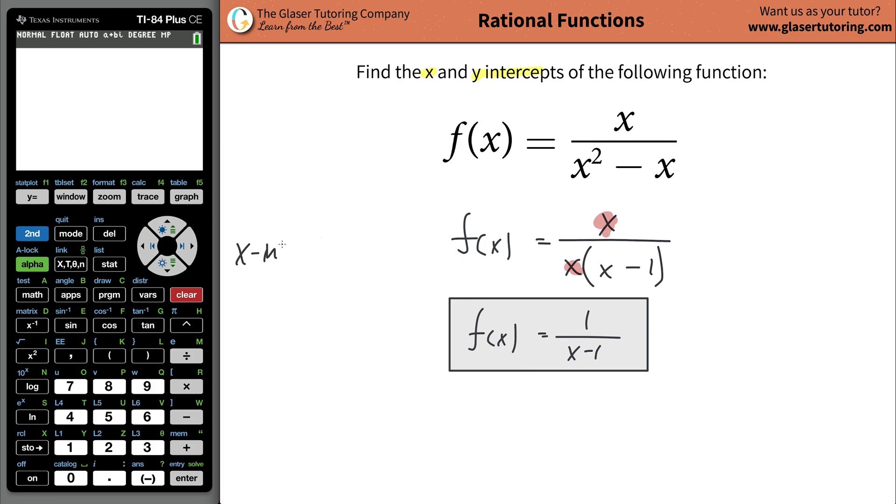So now if I want to find the x intercept all we're going to do is follow a simple series of steps. You're going to basically set the function equal to 0 and then solve for x. That's it. Solve for x. So take this thing. Instead of writing f of x just write 0 equals now 1 divided by x minus 1.